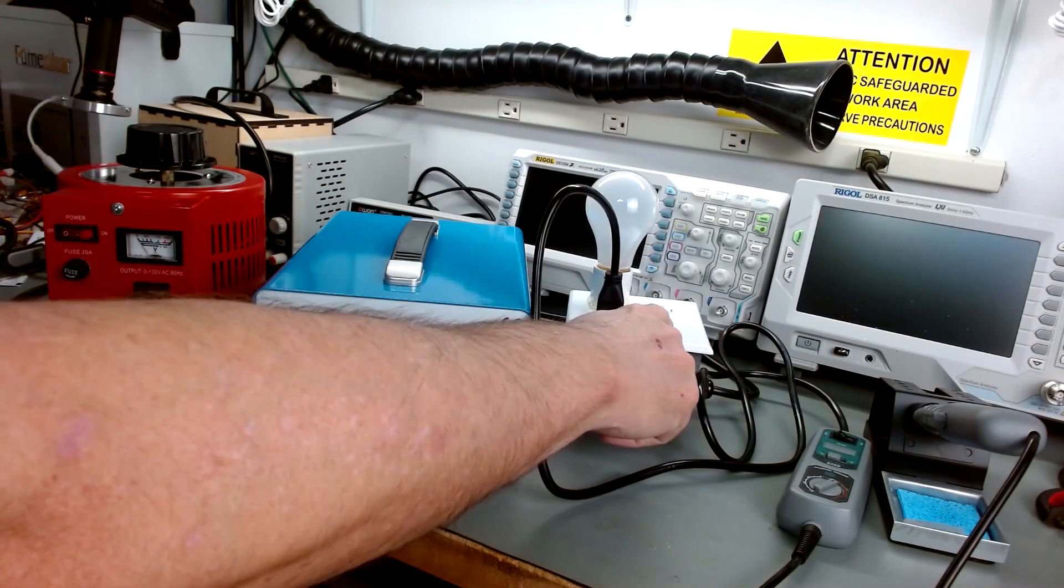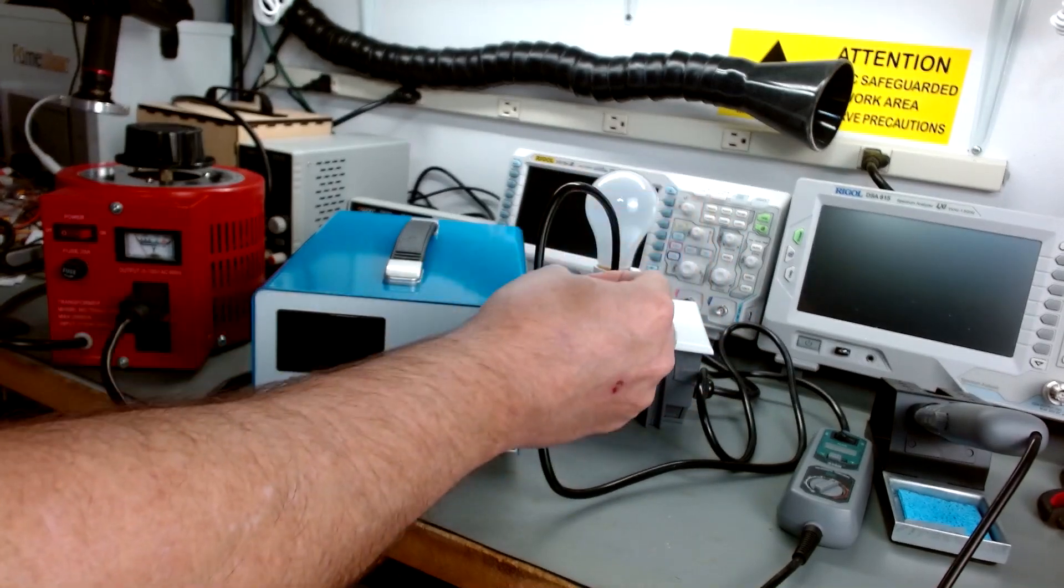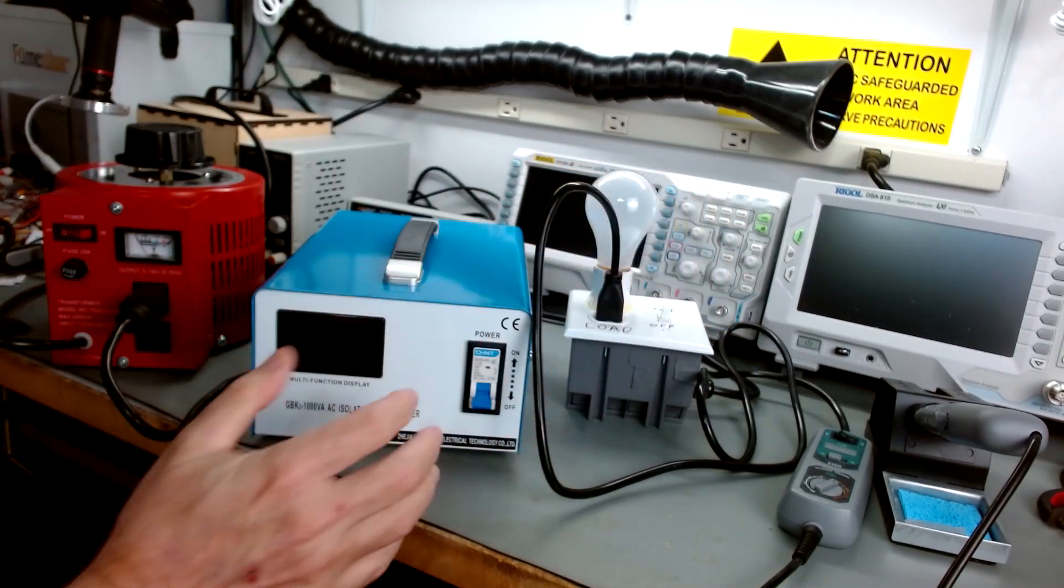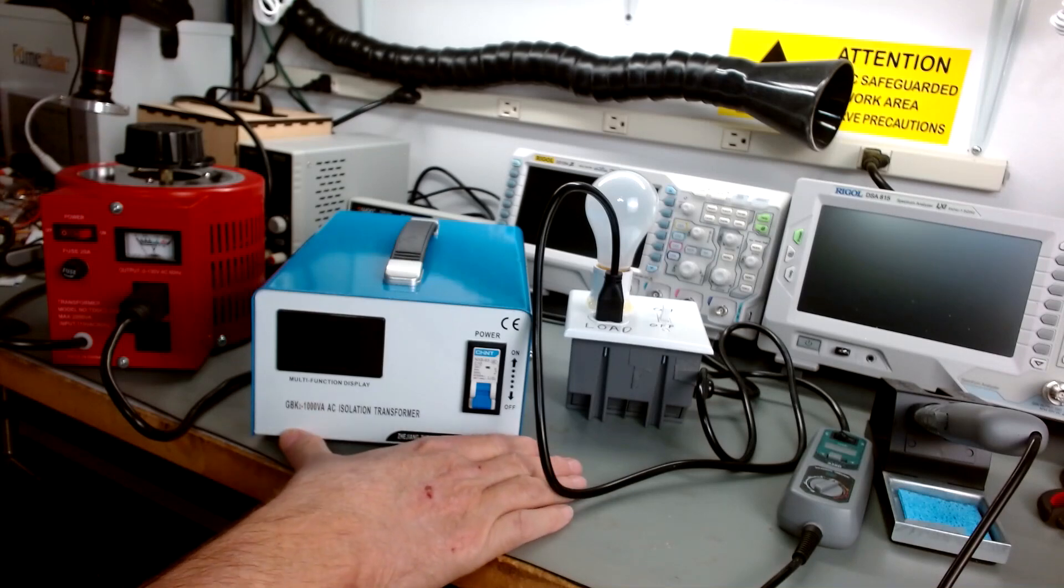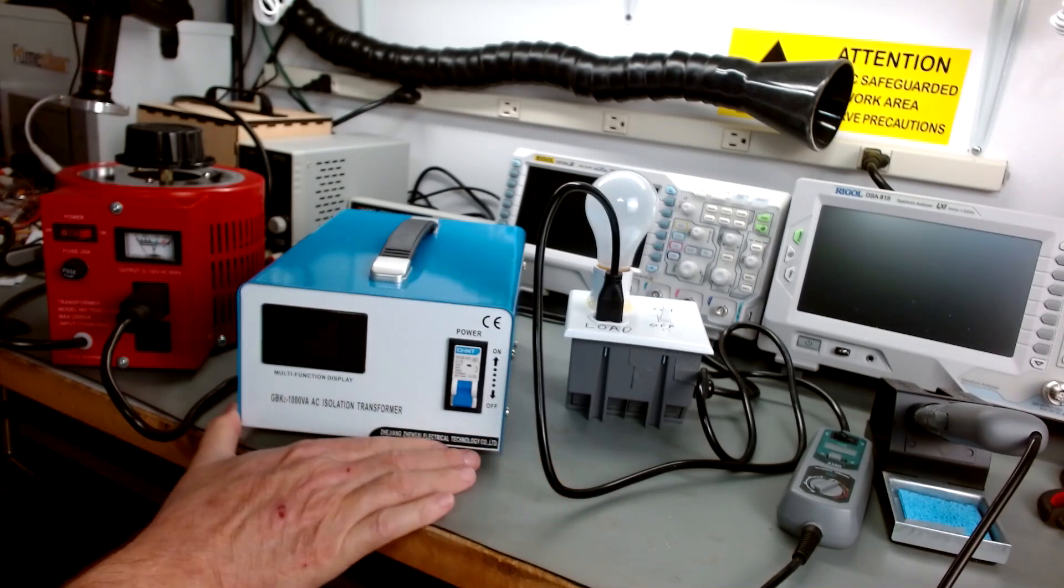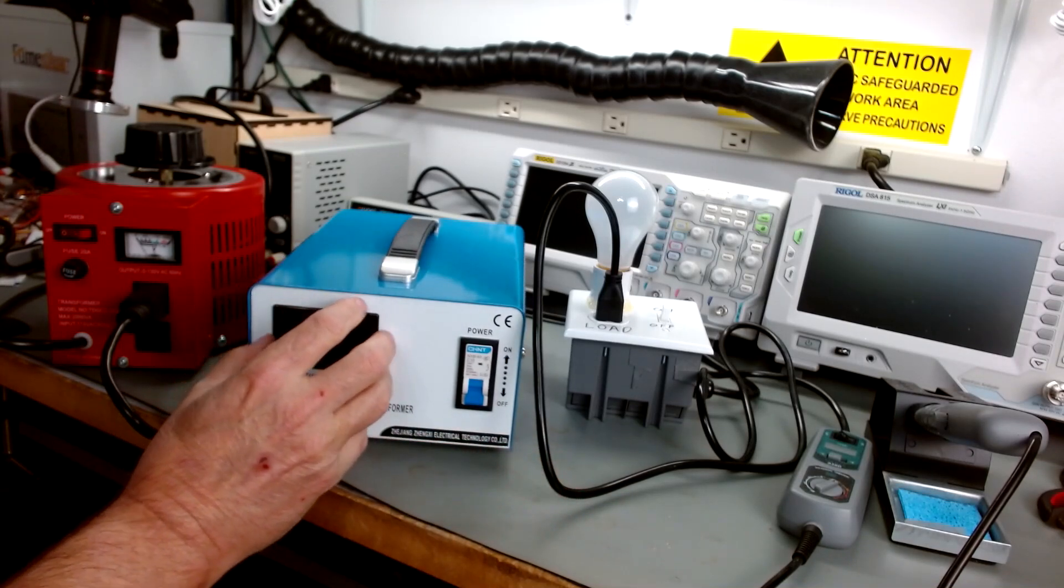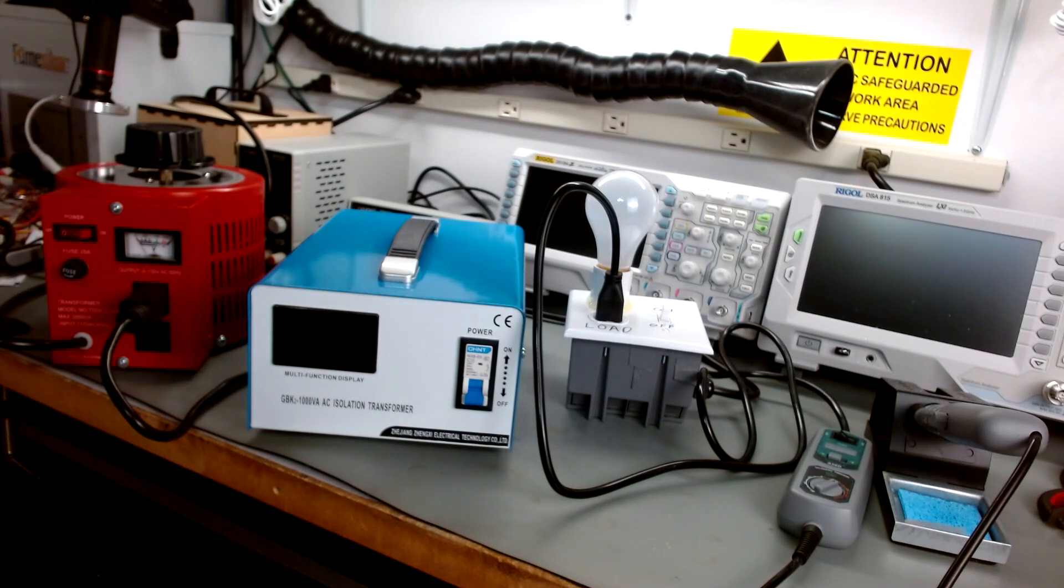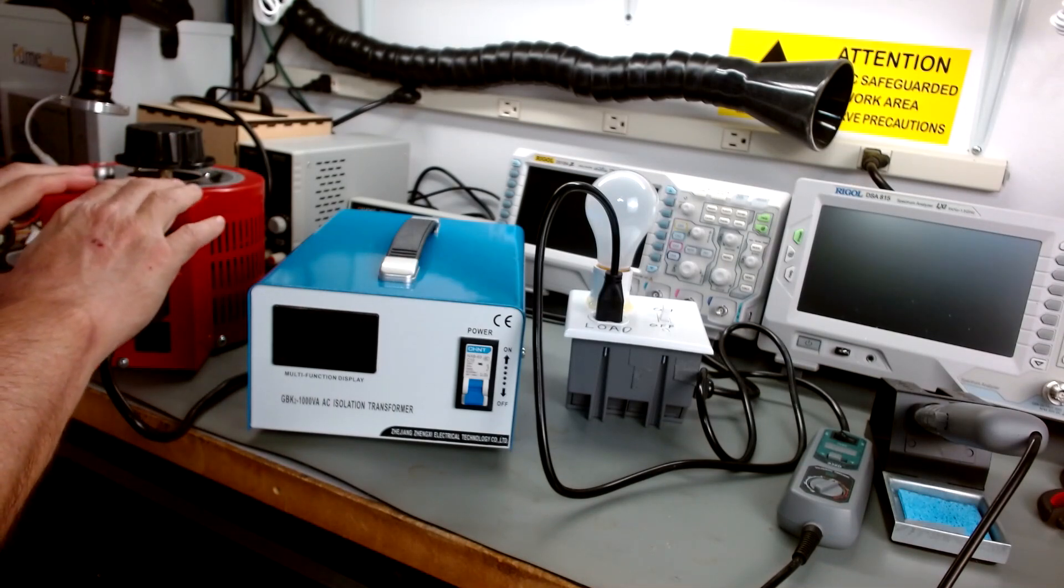You'll see some people build their DimBulbs with current meters and voltage and all that. I have this built into my isolator transformer. So when I'm bringing things up and I'm testing things, I can actually see.